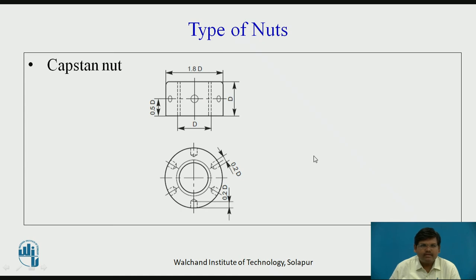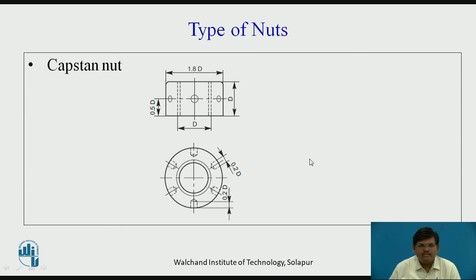Next we have capstan nut. Capstan nut is a cylindrical structure with holes drilled on its lateral surface. These holes are used to tighten or loosen the nut with the help of a tommy bar or metallic rod. The metallic rod can be inserted into the holes and the nut can be rotated to tighten or loosen it.